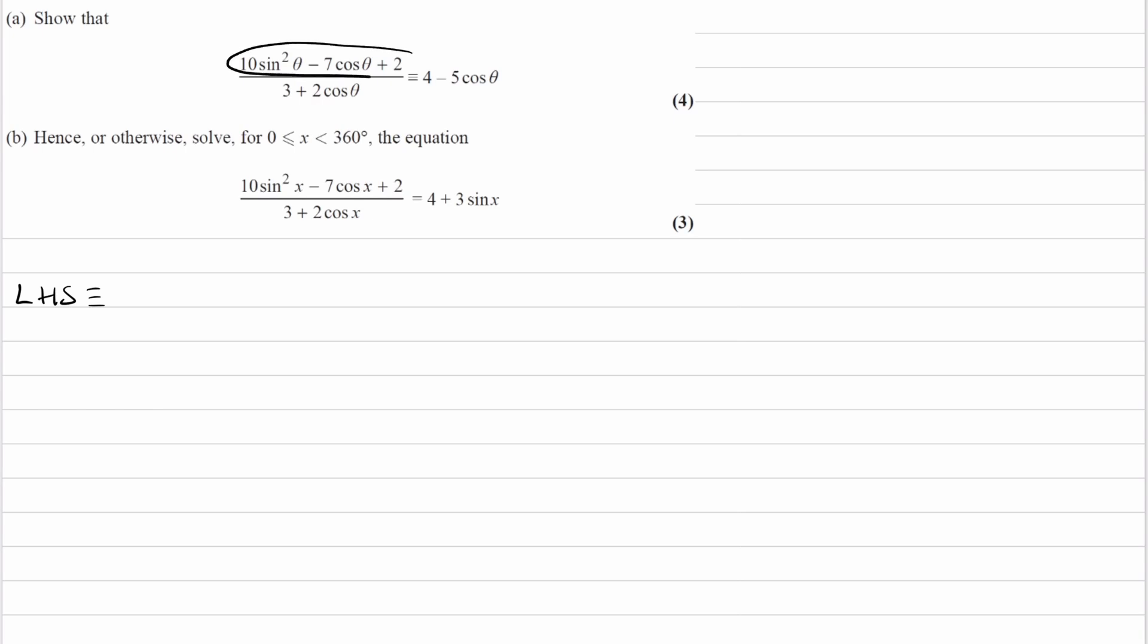The numerator, to me, looks like it will eventually become a quadratic if we were to use this identity and then rearrange for sine squared. And then we can sub that in our numerator.